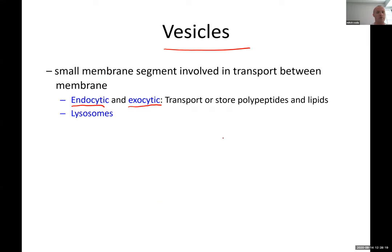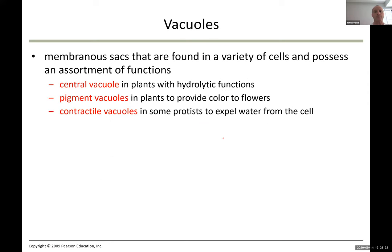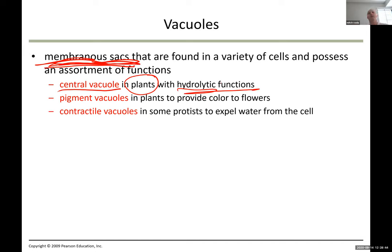Membranous sacs can also have other functions. The central vacuole is found only in plants and has a hydrolytic function. It contains electrolytes that regulate water movement — allowing water from the leaf to go out or come inside, absorb more water or release more water.